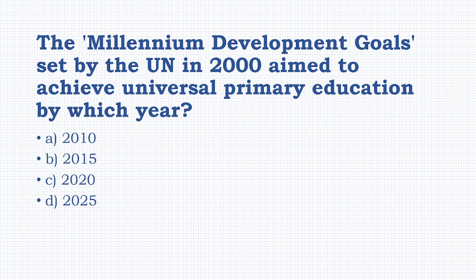The Millennium Development Goals set by the United Nations in 2000 aimed to achieve universal primary education by which year? Options: 2010, 2015, 2020, 2025. The answer is: 2015.